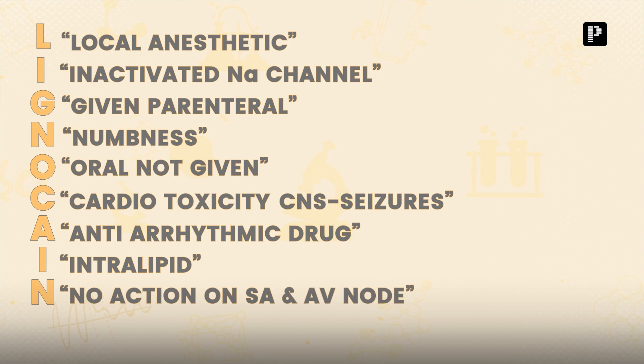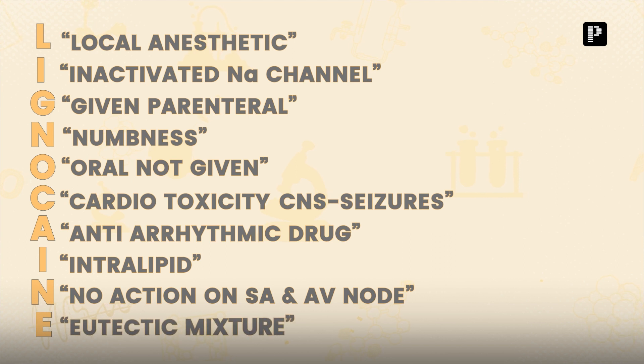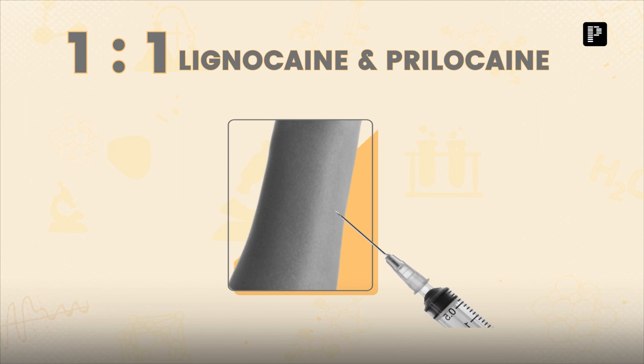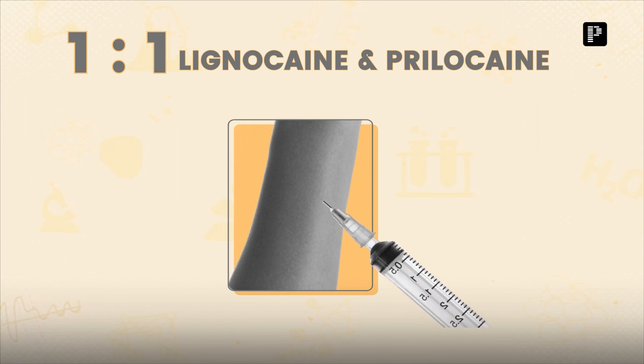The next letter 'N' — lignocaine has no action on the SA node and AV node, which is why it is not effective in atrial arrhythmias. The letter 'E' stands for EMLA — the eutectic mixture of local anesthetics — a 1:1 ratio of lignocaine and prilocaine that can penetrate intact skin, used during skin grafting. The final 'E' — lignocaine is effective in ventricular arrhythmias only.